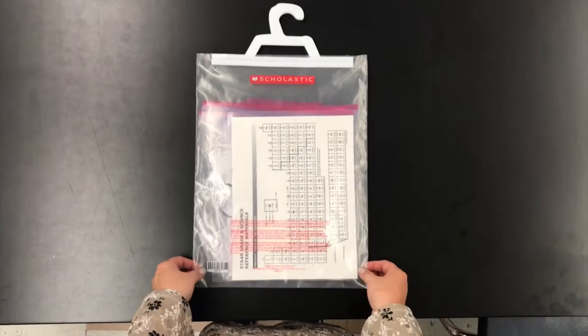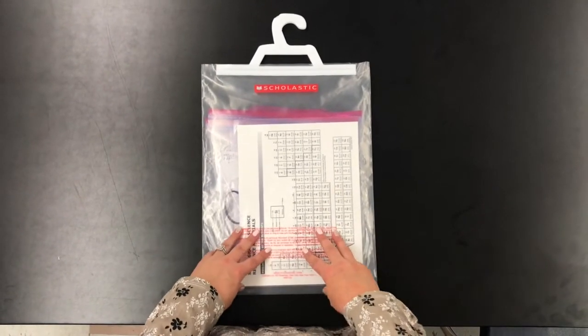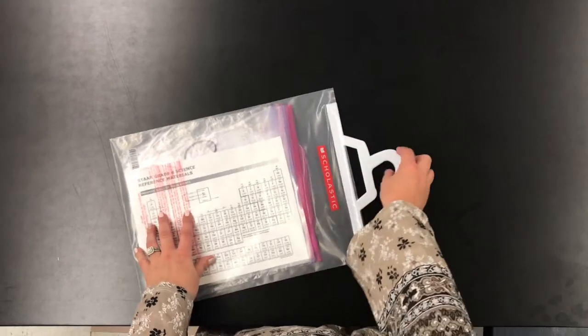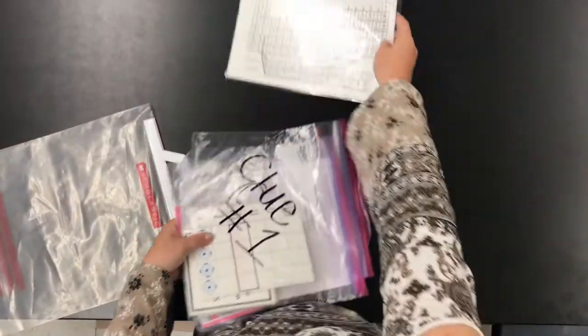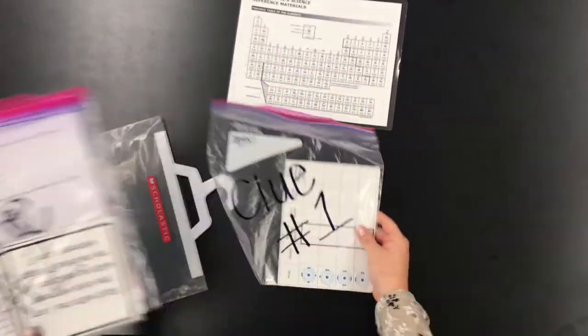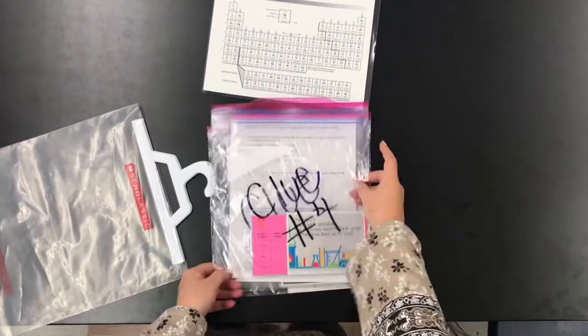All right, we have all of our clues located in one central bag. I will make one of these bags for every group in the class. So inside, I have a periodic table and a baggie that holds clue 1, clue 2, clue 3, and clue 4.